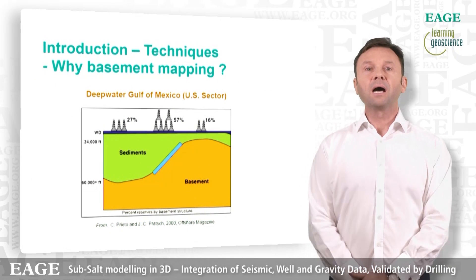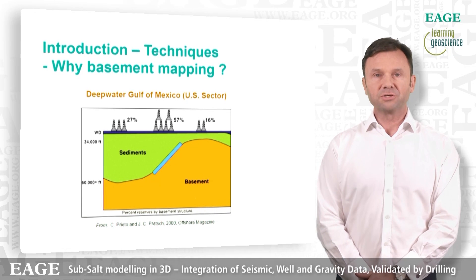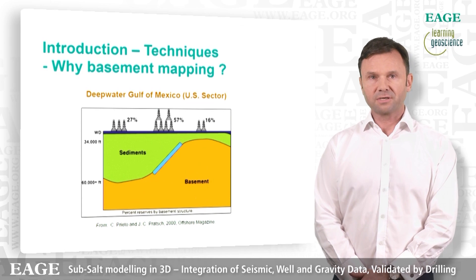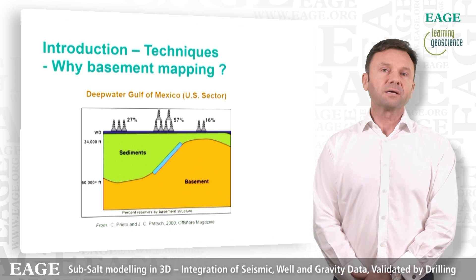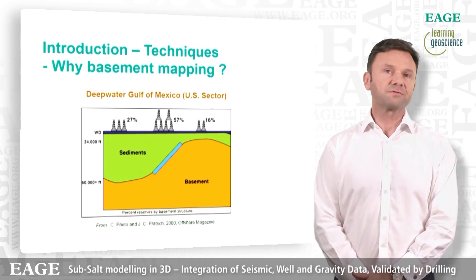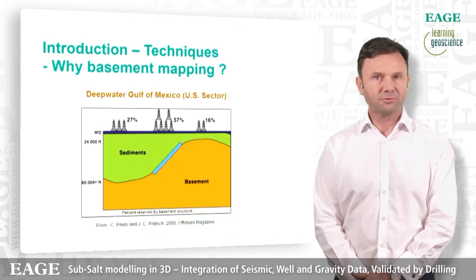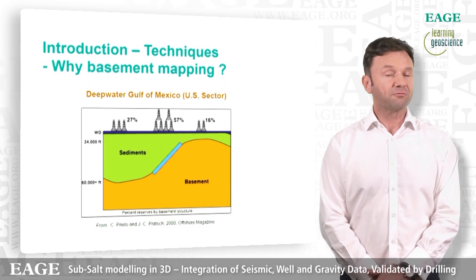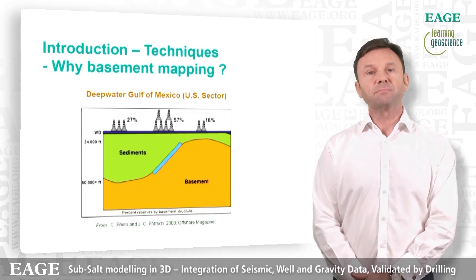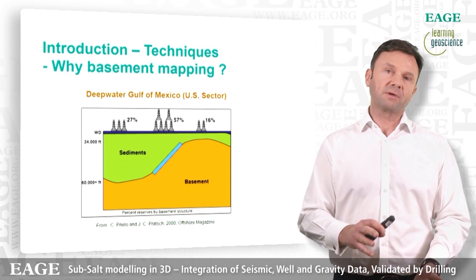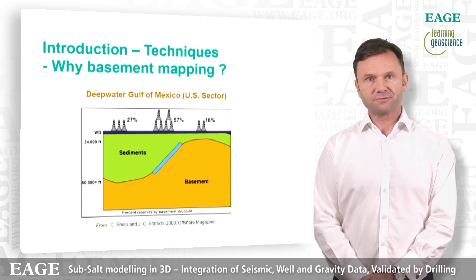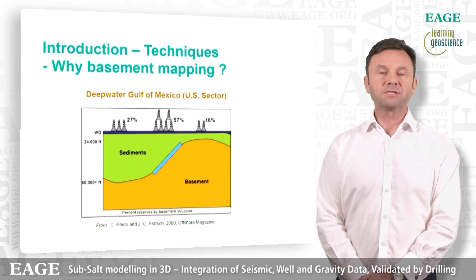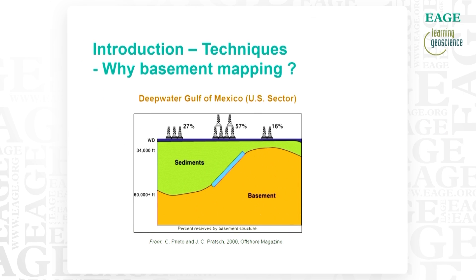As an example, Preto and others in 2000 published a small article describing that nearly 60 percent of the reserves found in the US side of the Gulf of Mexico were found on the flank of basement highs, as the basement forms the main controlling structural trap for a lot of these reserves. And of course, gravity is rather good at mapping these kinds of sedimentary basins and basement highs.